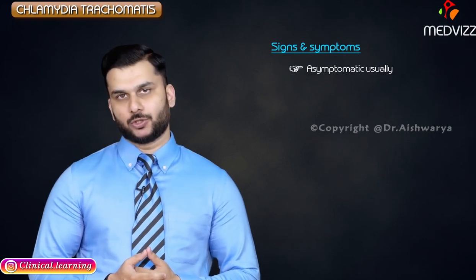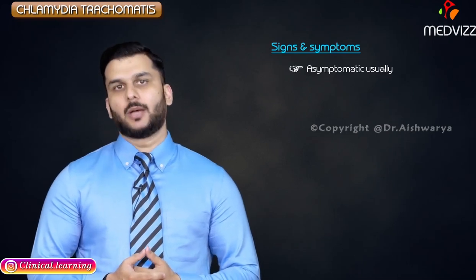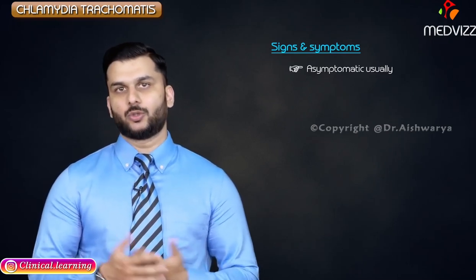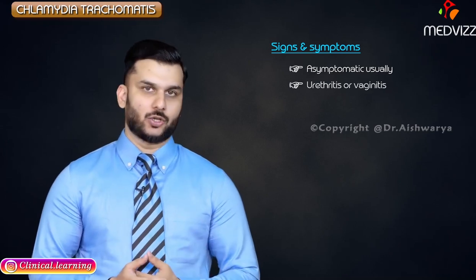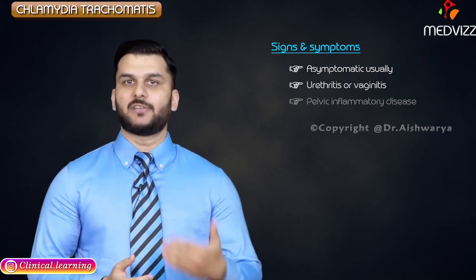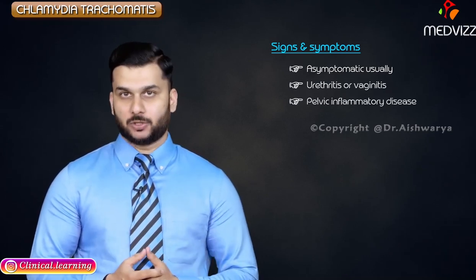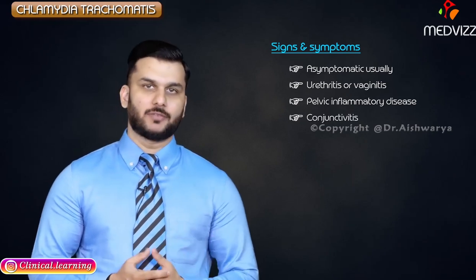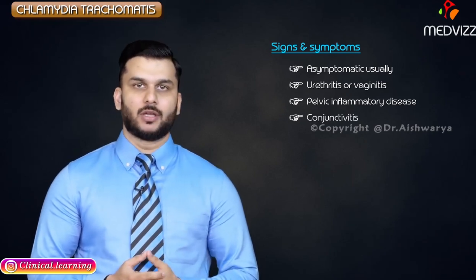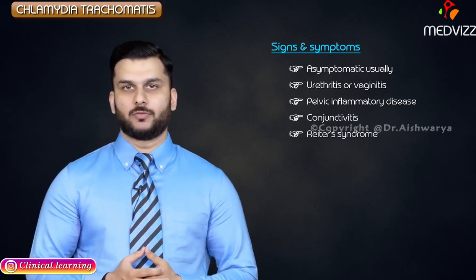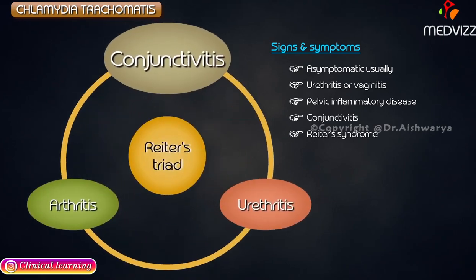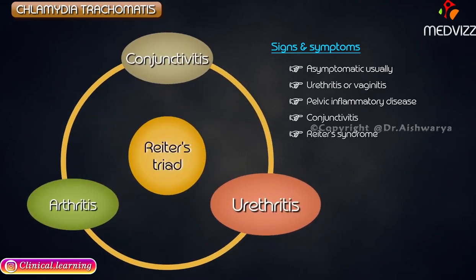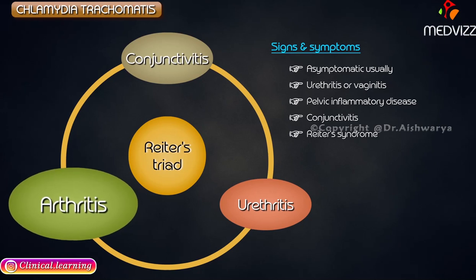Infection can be asymptomatic usually. If symptoms occur, they present as urethritis or vaginitis, pelvic inflammatory disease, conjunctivitis, or Reiter's syndrome — which is a triad of conjunctivitis, urethritis, and arthritis.